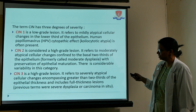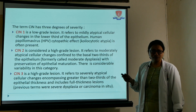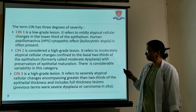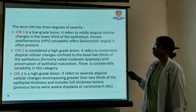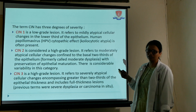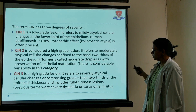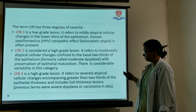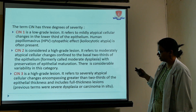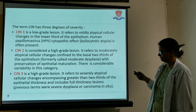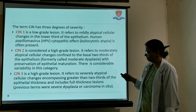CIN-1 is a low-grade lesion. It refers to mildly atypical cellular changes in the lower third of the epithelium. CIN-1 human papillomavirus cytopathic effect — that is koilocytic atypia — is often present, meaning only one third of the epithelium is affected.